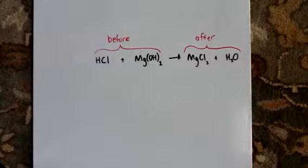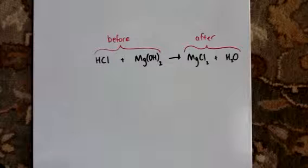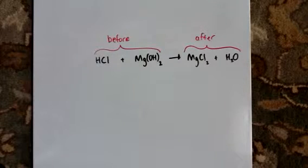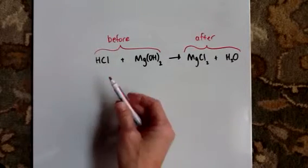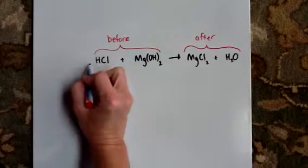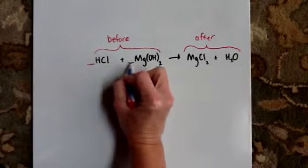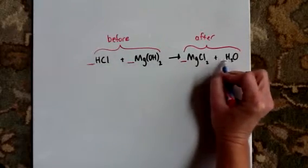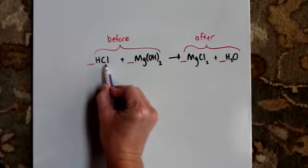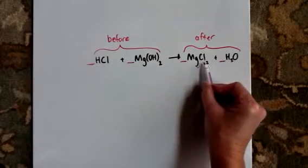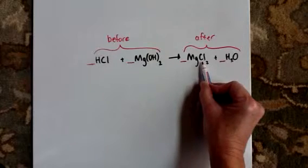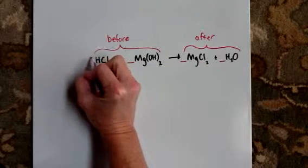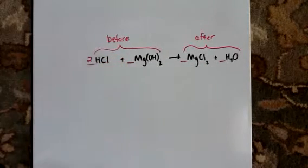So let's look at what else we could balance. Let's just go ahead and start with chlorine. Remember, we're only changing the numbers in the front, so those numbers that go here. Chlorine, there's one chlorine before and two chlorines after. So I can add a two here, and chlorine is balanced.